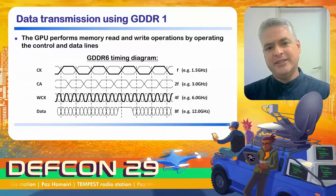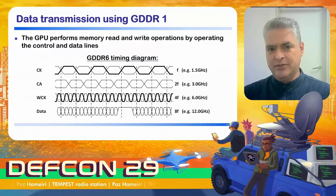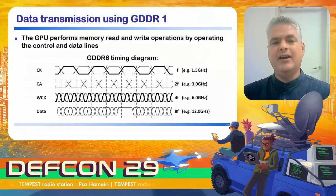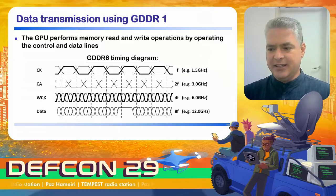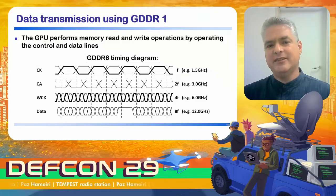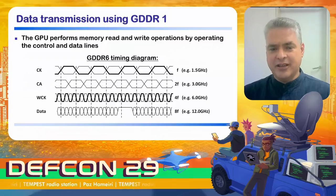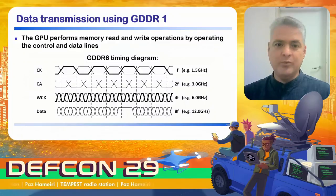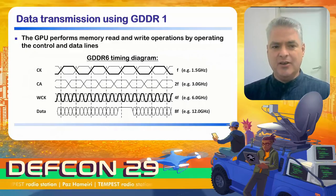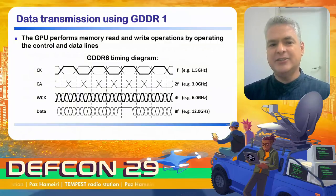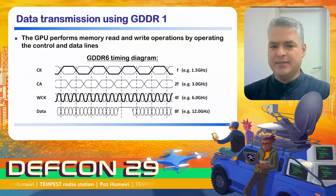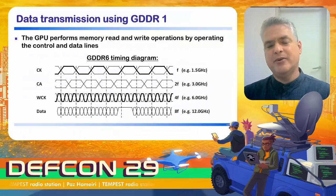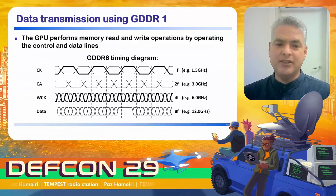We can turn PCB traces in computers into electromagnetic wave generators. If we can make a line emit energy at will and control the duration, then we have on-off keying modulation. The signals I decided to use were the signals between the GPU and the GDDR — the memory installed in graphics cards. The GPU performs memory read and write operations by operating the control and data lines of the GDDR.